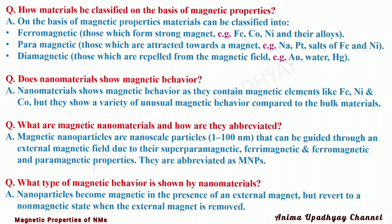How can materials be classified on the basis of magnetic properties? On the basis of magnetic properties, the materials can be classified into three classes. First, ferromagnetic — these are the substances which form strong magnets. Examples are iron, cobalt, nickel and their alloys.